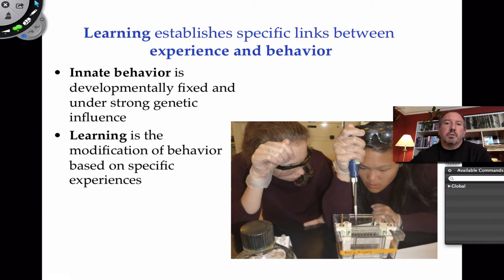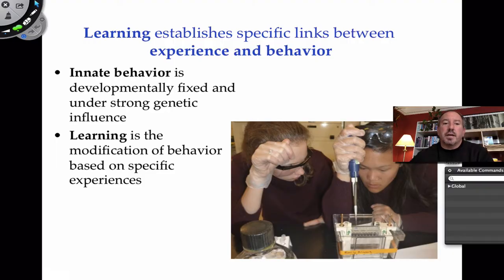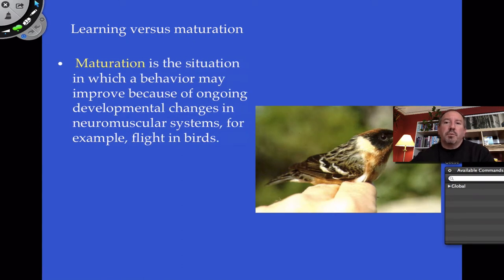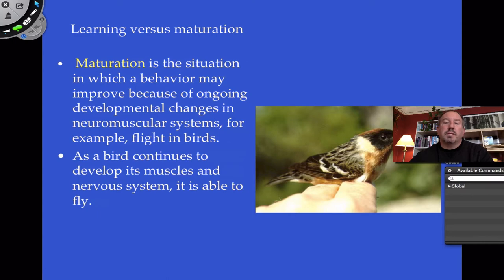Here's the connection between innate behavior and learning. Learning is really important in animal biology because innate behavior is fixed — it's either going to work for you or not. But learning is modification: you can learn something that's not good and then adjust your behavior and avoid that the second time around. I want to differentiate what we mean when some people say the bird's learning to fly or the baby's learning to walk — not exactly, because learning to fly has more to do with something called maturation. There's a neuromuscular development that occurs over a period of time which enables a bird to be able to fly. It's not true learning.